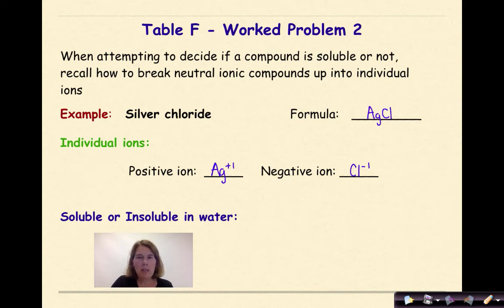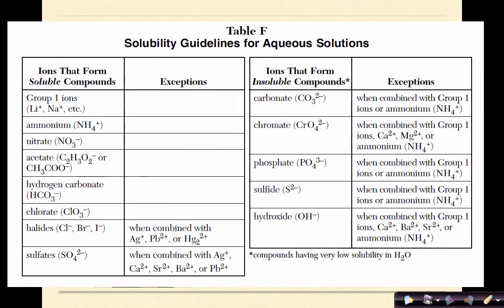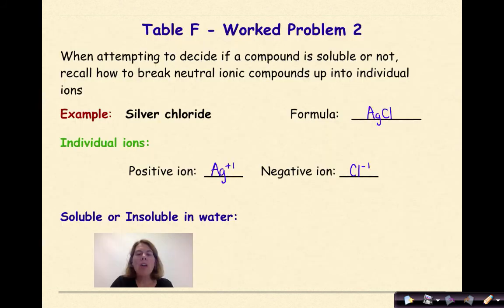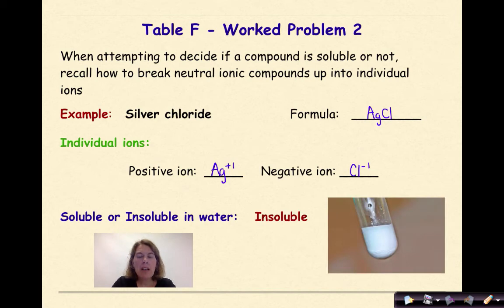So I look at reference table F, and I start by looking over on the left-hand column. Now, Ag doesn't fall into the far left-hand column of soluble ions, but Cl-1 does. So Cl-1 is typically soluble, unless it is bound to Ag+1. There's my first example of something that is insoluble. So AgCl is going to be classified as insoluble.